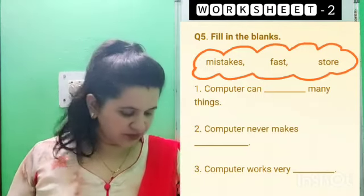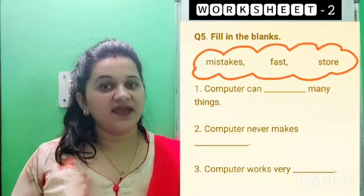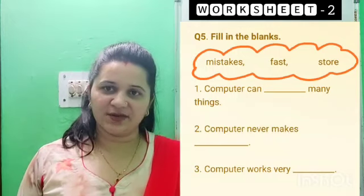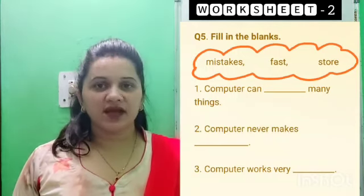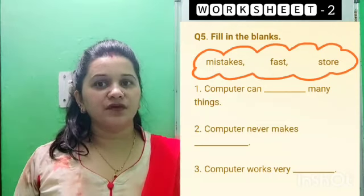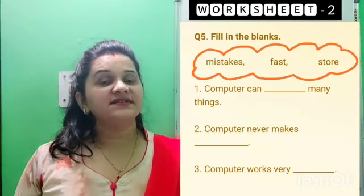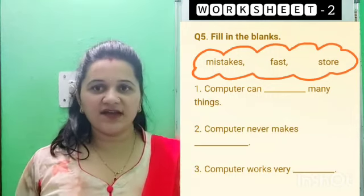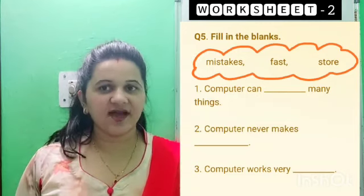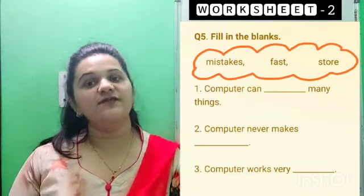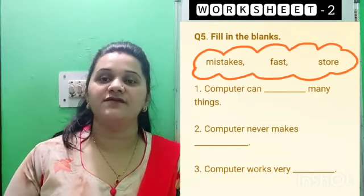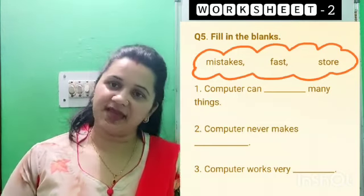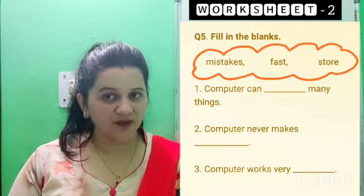The third one: computer works very blank. Options are given — find out the correct answer and write it down in your notebook. If you have gone through this chapter and studied it hard, then you can do this worksheet on your own. Try to read the chapter at home and solve this worksheet — it is a kind of a test.